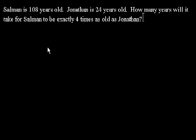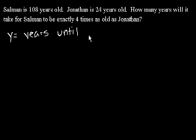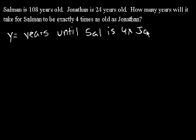Well, let's figure this one out. What we're trying to solve for is how many years will it take? So let's use the variable y for years. So y equals years until — let's just say Sal for short — Sal is four times Jonathan's age.